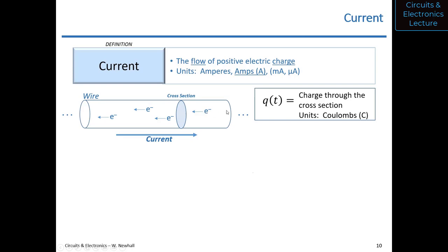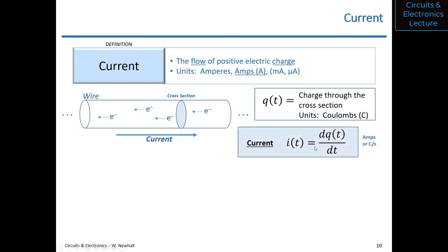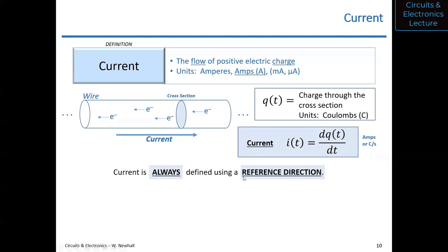Current is the time derivative of charge: i equals dq/dt. It's a flow in coulombs per second. If the unit of charge is coulombs, then the rate of flow is coulombs per second — just like gallons per minute for water through a pipe. When we define a current, we always define a reference direction. It matters which way charge flows, just as it matters whether a tank is emptying or filling.